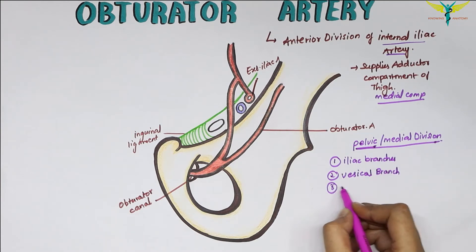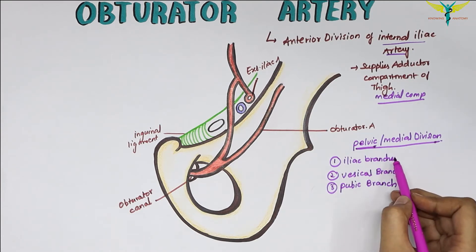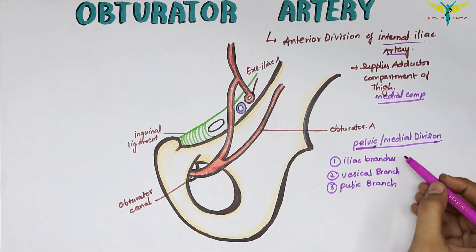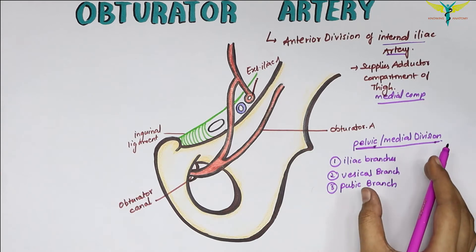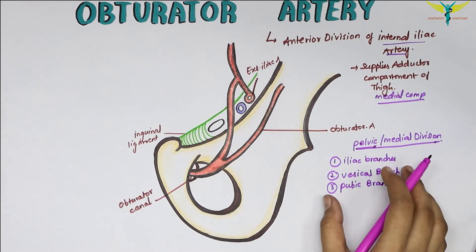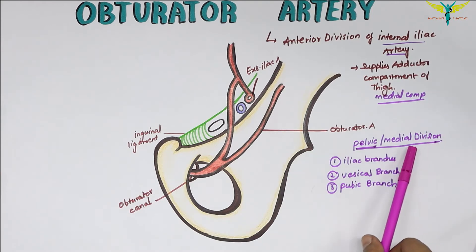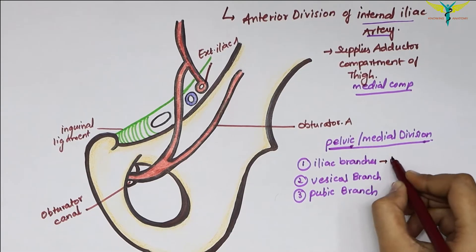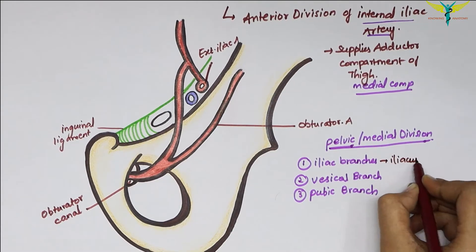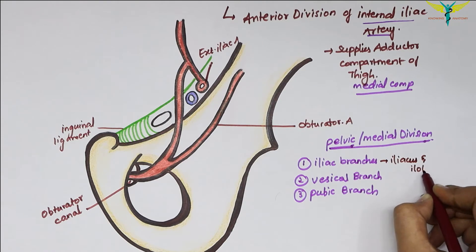The pelvic division branches include the iliac branches, the vesicle branch, and the pubic branch. The iliac branches supply the iliac bone and the iliacus muscle, and anastomose with the iliolumbar artery.